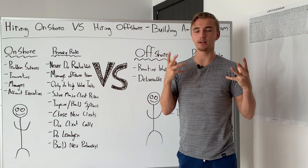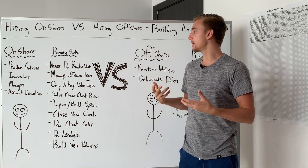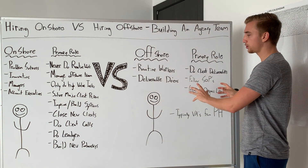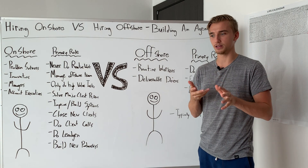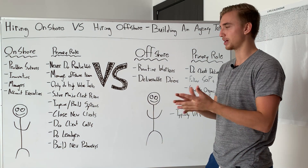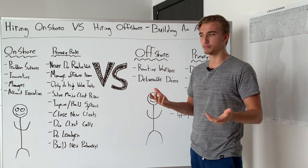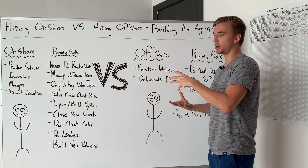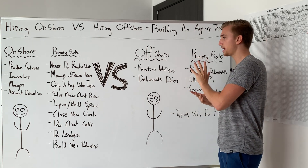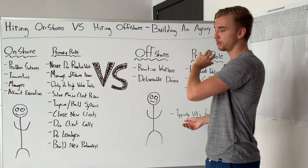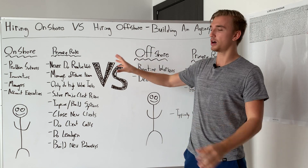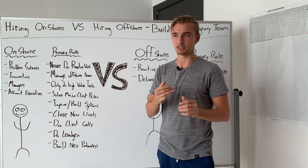The offshore team pretty much just follows SOPs built by the onshore team. Think of the onshore team as the brain — building the engine and making sure it goes as fast as possible — while the offshore team is like the fuel in the car keeping the engine running. The offshore team ensures the quality of work for clients is good and does all the deliverables. The onshore team manages them correctly, and if there are any issues in the system, the onshore team manipulates and improves the system — the offshore team isn't fixing it.